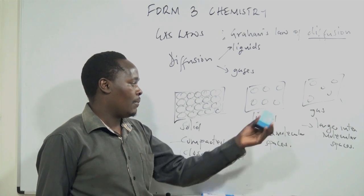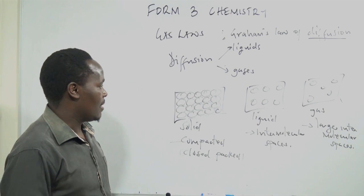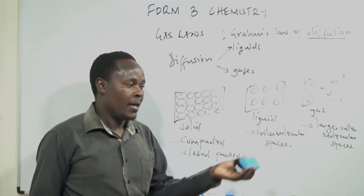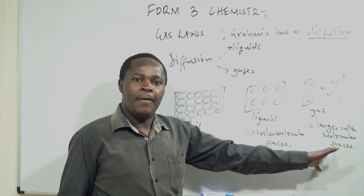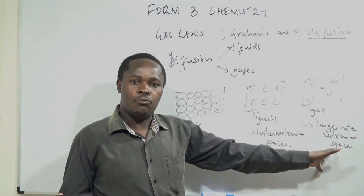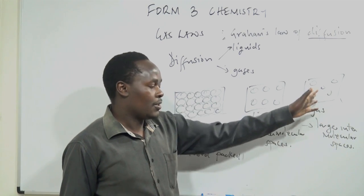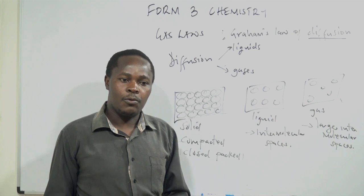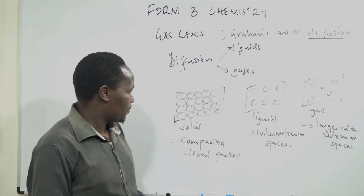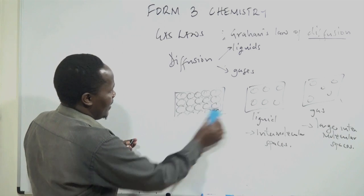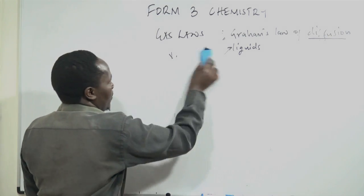The force of attraction between one particle and the other in solids is so strong that the particles cannot move away from one another, and therefore they are firmly held within their position. In liquids we have intermolecular spaces, and in gases the large intermolecular spaces make the particles move even faster, because the forces of attraction between the particles are so weak that the particles can move on their own. So how do we compare the rate of diffusion in liquids?